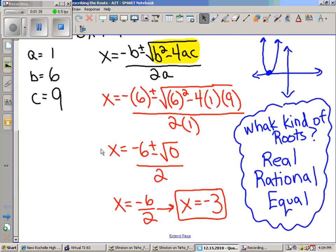Simplify it down, and it turns out the discriminant in this particular case was zero. Adding zero, plus or minus zero to anything doesn't change the number, so you just get negative six over here, and negative six divided by two is negative three. How would you describe the roots? Well, first of all, negative three is a real number. It's definitely a rational number, and there's only one of them, so it's equal.